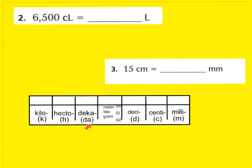I want you to focus on the left side of my basic unit. Every place to the left of my basic unit will be 10 times greater. A decameter, liter, or gram is 10 times greater than your basic unit. A hectometer, liter, or gram will be 100 times greater. And a kilometer, kiloliter, or kilogram will be 1,000 times greater than your basic unit, because it's all based on the powers of 10 — 10 times, 100 times, 1,000 times greater.